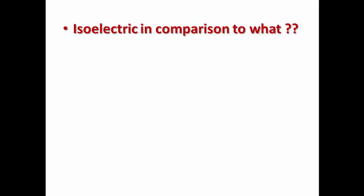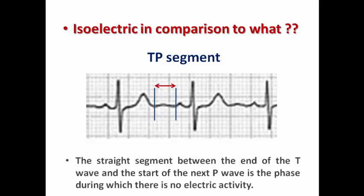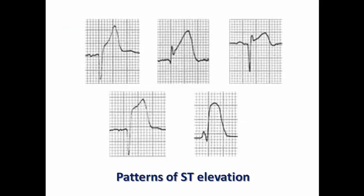The question we always ask is: isoelectric ST segment in comparison to what? The baseline reference is the TP segment — the segment after the end of the T wave and before the start of the following P wave of the next cycle. This segment represents an area without any electrical activity. The TP segment is the baseline isoelectric line to which we compare both the ST segment and also the PR segment in cases such as pericarditis.